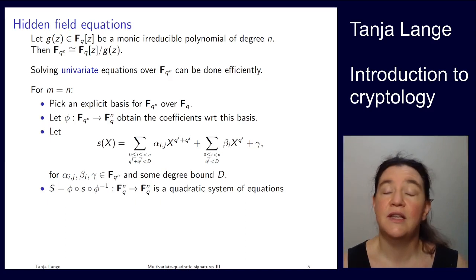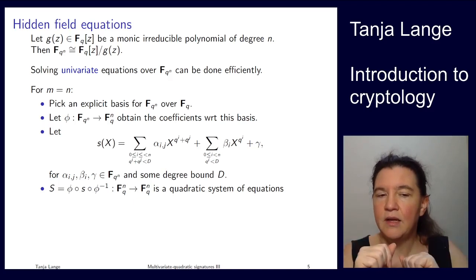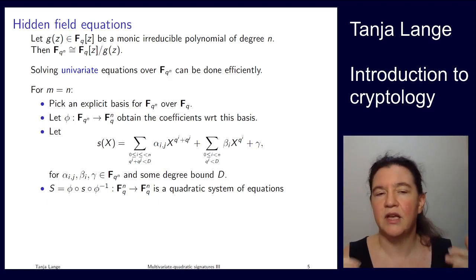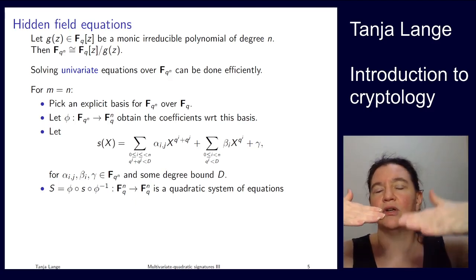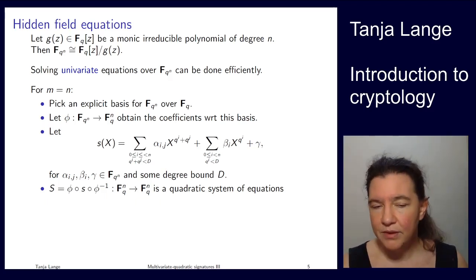Then there's also some alpha term, α_{ij}, because there are two powers here—so it's q^i plus q^j. The coefficients α_{ij}, β_i, and γ live in the big finite field F_{q^n}. We again have this degree bound on the exponents, so the degree of this whole equation is no larger than capital D. As I said before, solving such a univariate polynomial depends on the degree of it—that's where the D comes in. So let's define this interesting map or system capital S by taking—it has to be F_q^n to F_q^n—so we're starting by going from representing its coefficients to the representation of finite field elements F_{q^n}, then having this polynomial, and then mapping back.